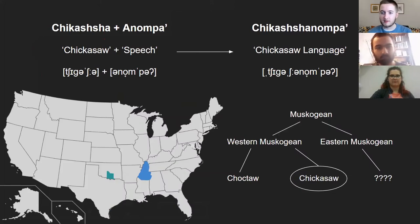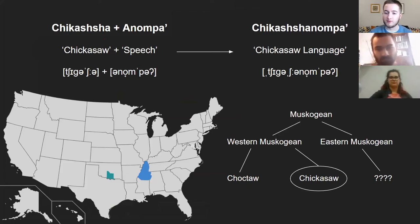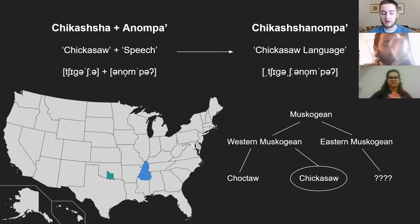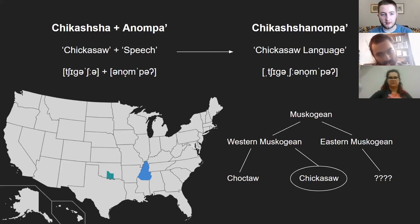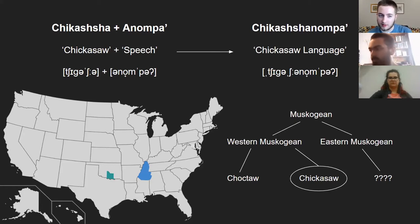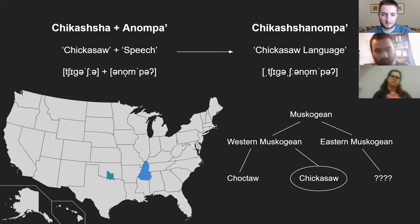Chickasaw, or as it's pronounced in its own language, is a member of the Muskogean language family. More specifically, it is part of the Western Muskogean branch, which it shares with its close neighbor Choctaw. Chickasaw was historically spoken in northern Mississippi, as well as parts of Tennessee and Kentucky. But today it is primarily spoken in southern Oklahoma. The word for the Chickasaw language, Chagashanompa, is made of two nouns: Chagashaw, meaning Chickasaw, and Anompa, meaning speech. Indeed, Chickasaw is an agglutinating language, and many words are comprised of many morphemic units.